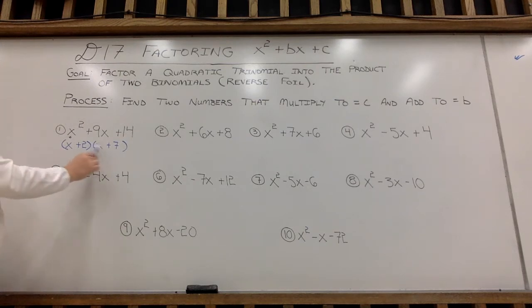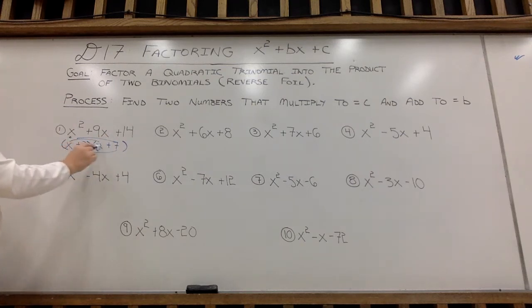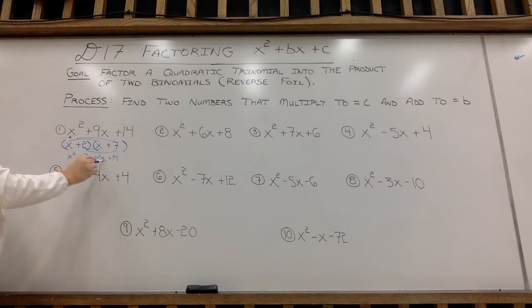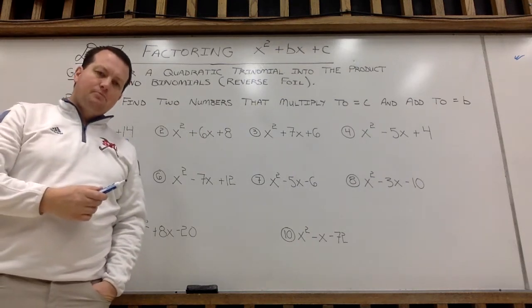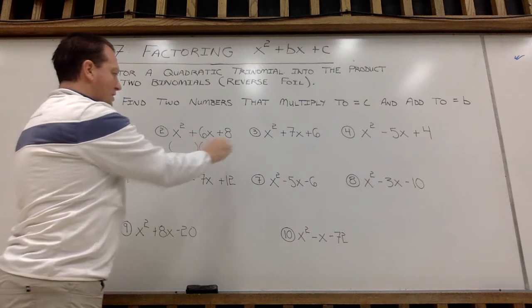So what we're looking to do here is show that if I were to FOIL first, outside, inside, last, these two binomials, I would get to this trinomial. So I'll just show on this example: x times x, x squared, x times 7, 7x, 2 times x, 2x, and then 2 times 7 is 14. So as you look here, the 7x and 2x in the middle, yes, do make 9x. So x plus 2 times x plus 7 is my final answer. Again, I'm just showing the work here to illustrate the process so you can always check your work. We'll try to pick it up a notch here. Hopefully you've kind of got the gist of it.